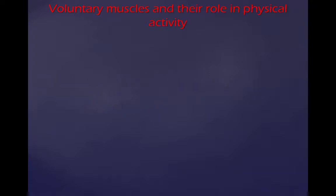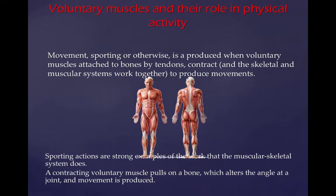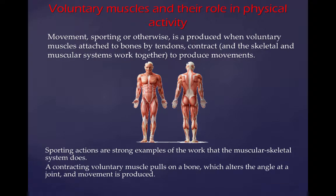Voluntary muscles and their role within physical activity. Movement, sporting or otherwise, is produced when voluntary muscles attached to the bones by tendons contract to produce movement. Sporting actions are strong examples of the work that the musculoskeletal system does. A contracting voluntary muscle pulls on a bone, which alters the angle of the joint and a movement is produced.